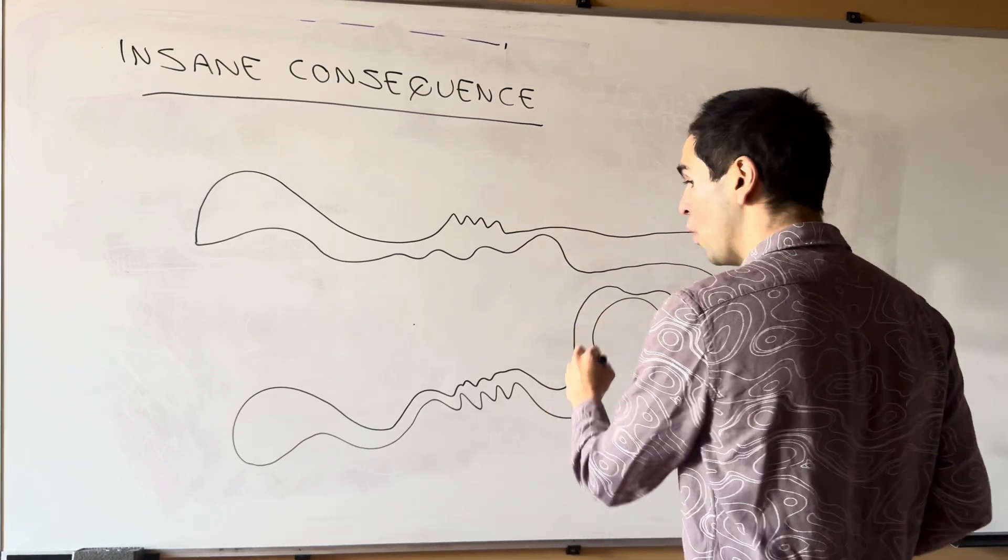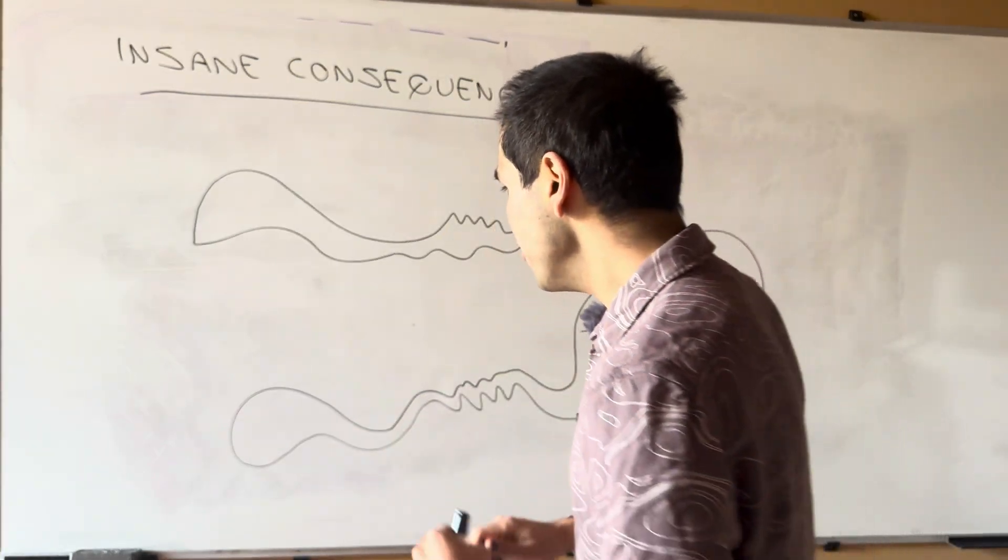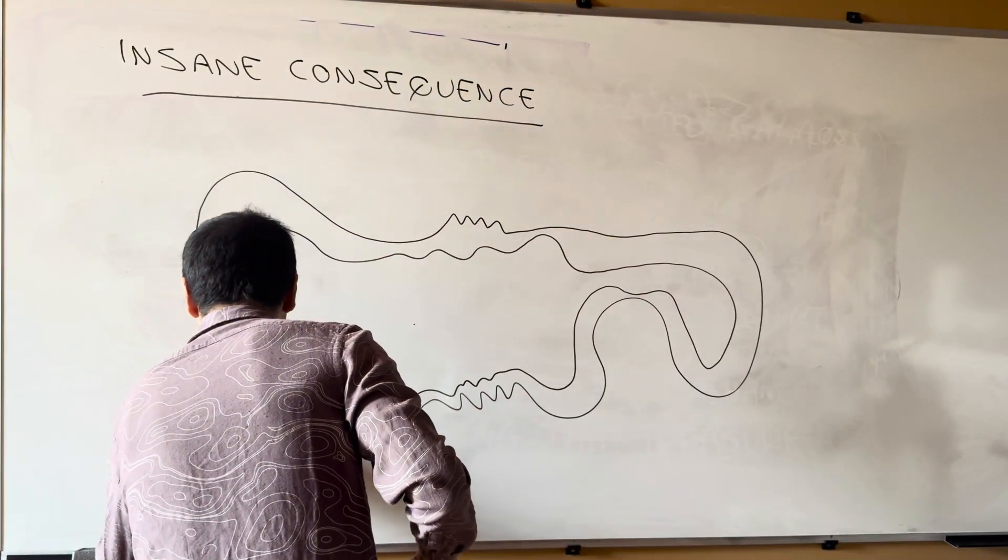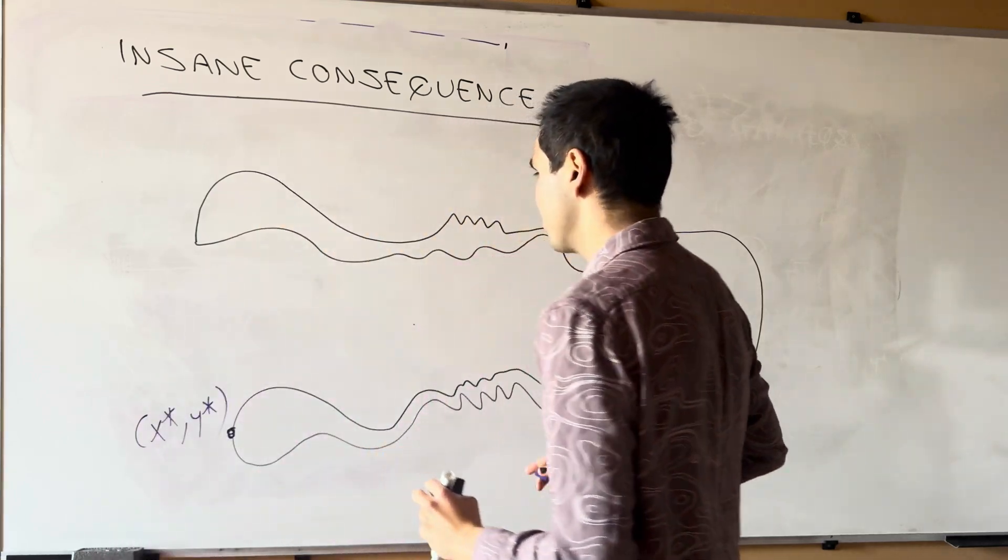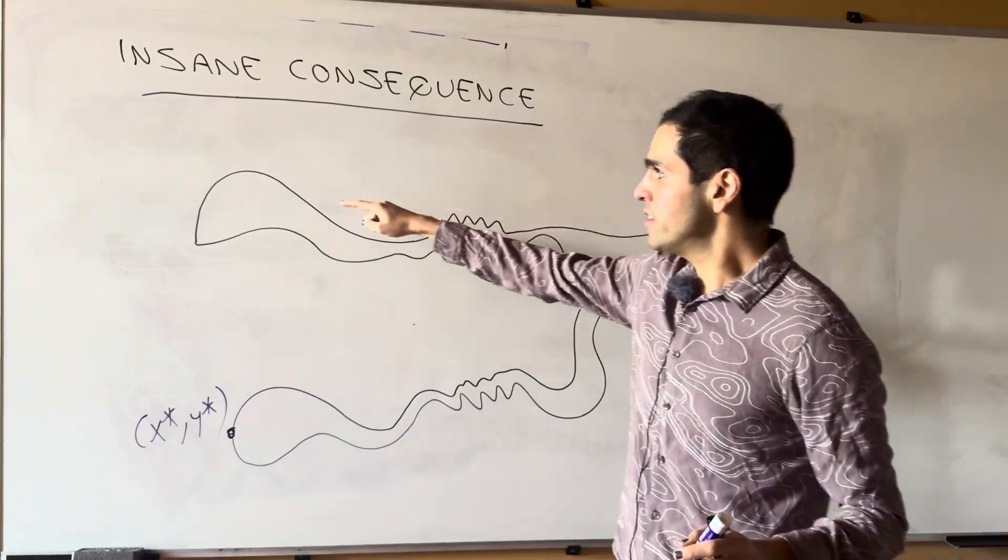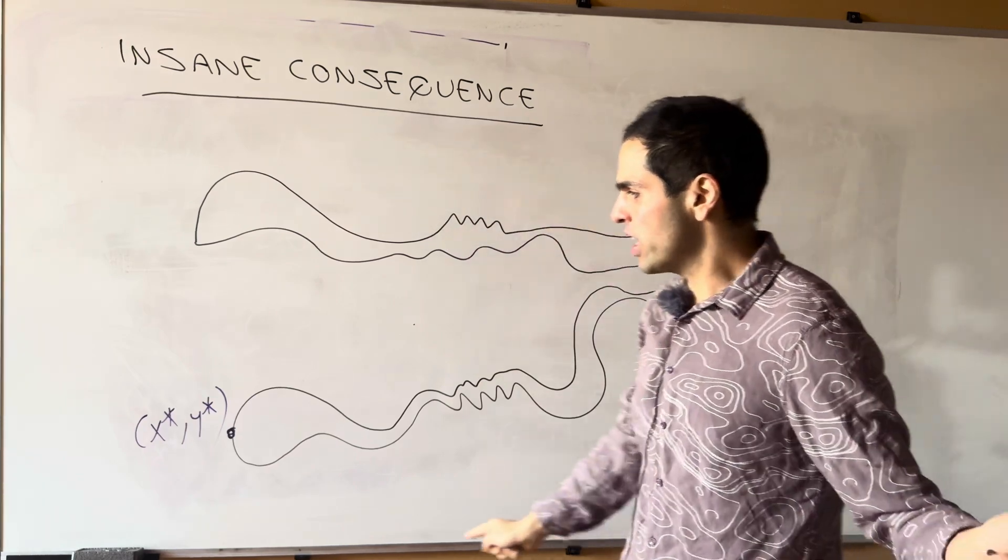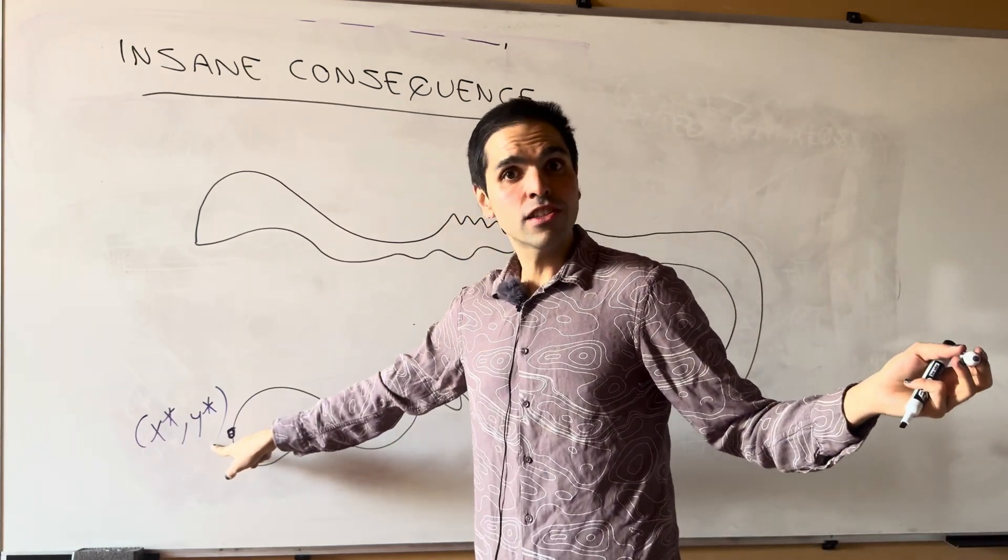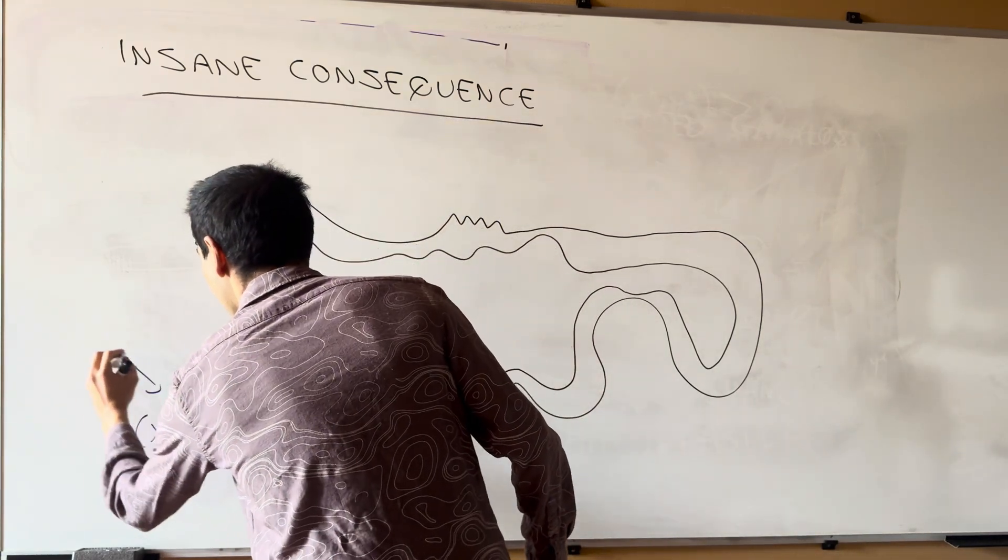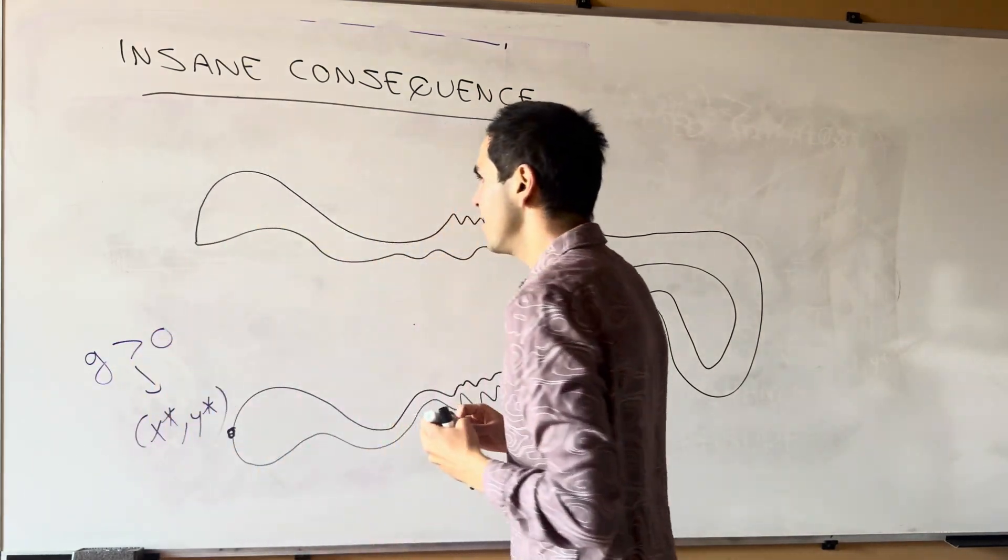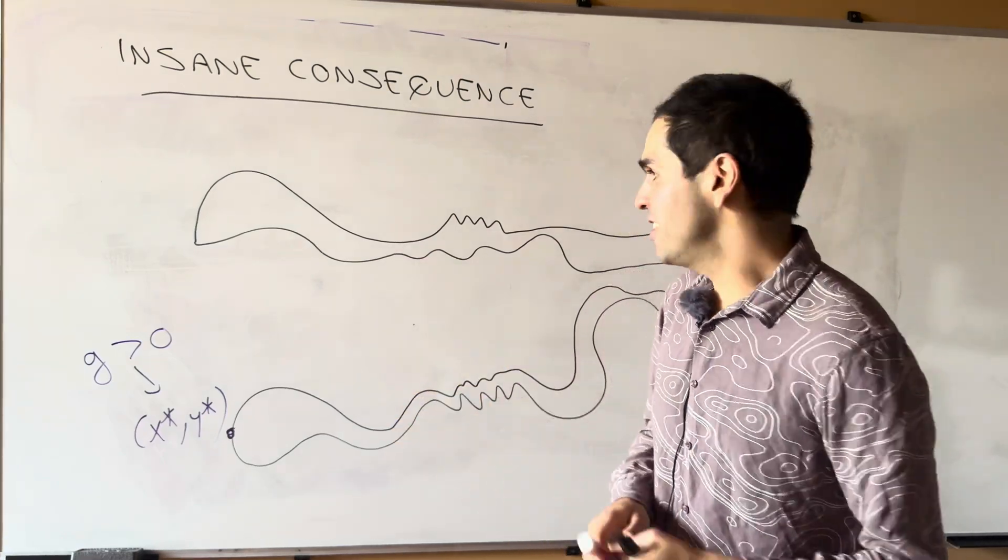And suppose that at this point here, there is a little treasure. So let's call it x star y star. And the way we'll write this is, suppose our gain g is zero everywhere except at this particular point where it's positive.